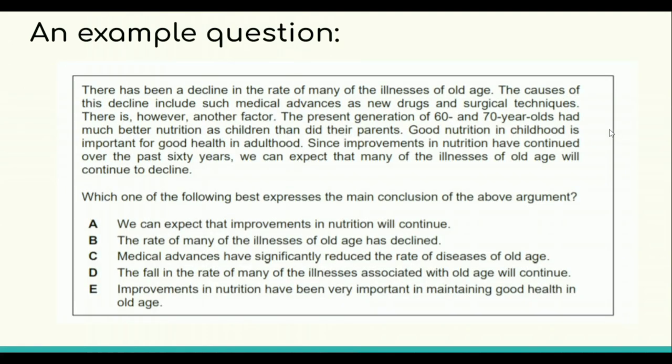The way critical thinking works is that they give you a passage of text, maybe four to five lines, and they ask you a question. They might ask you which of the following best expresses the main conclusion of the argument, or which of the following is an assumption in the argument, or which of the following is the best flaw in the argument. As we said earlier, IMAT is multiple choice. You are going to get five options. So you will get a passage of text, a question, and five options. So for critical thinking, it's better to follow the three-step method.